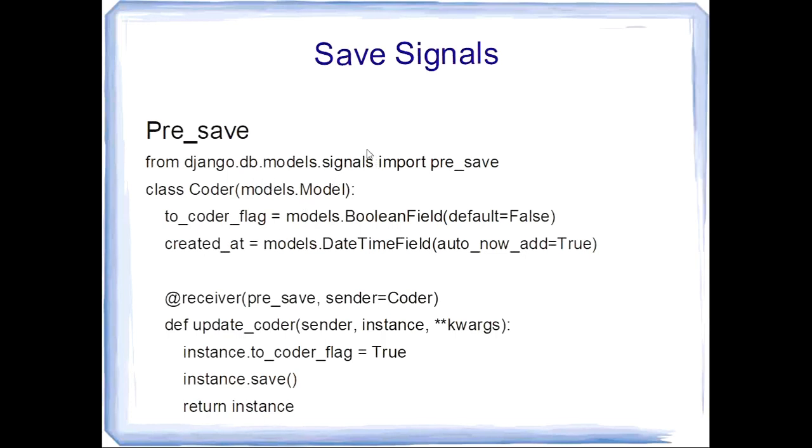First of all, we have to import the signal model and call the method pre_save. Here I created one model class which consists of attributes: coder, coder_flag, and created_at. These attributes are there in my model.